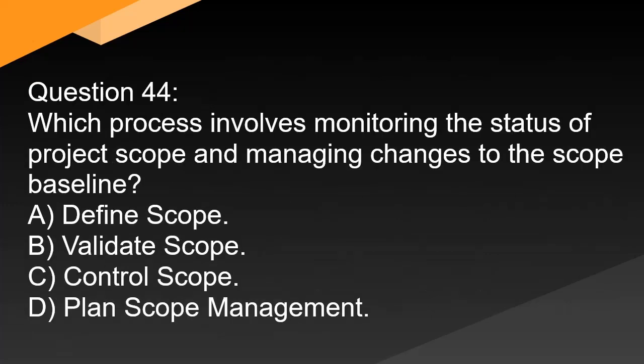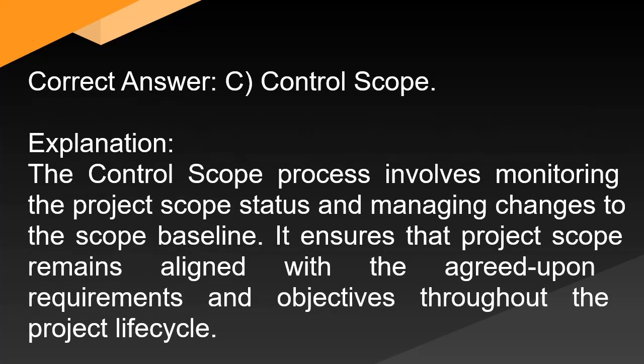Question 44: Which process involves monitoring the status of project scope and managing changes to the scope baseline? A. Define scope. B. Validate scope. C. Control scope. D. Plan scope management. Correct answer: C. Control scope. Explanation: The control scope process involves monitoring the project scope status and managing changes to the scope baseline. It ensures that project scope remains aligned with the agreed-upon requirements and objectives throughout the project lifecycle.